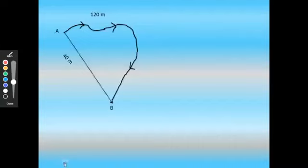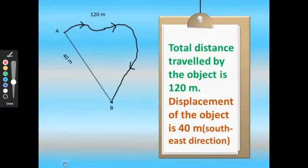The path of an object moving from point A to point B is shown. The total distance travelled by the object is 120 meters. The displacement of the object is 40 meters in the southeast direction.